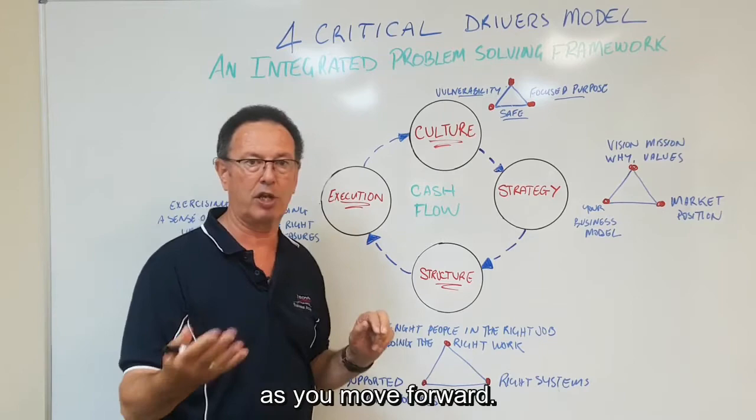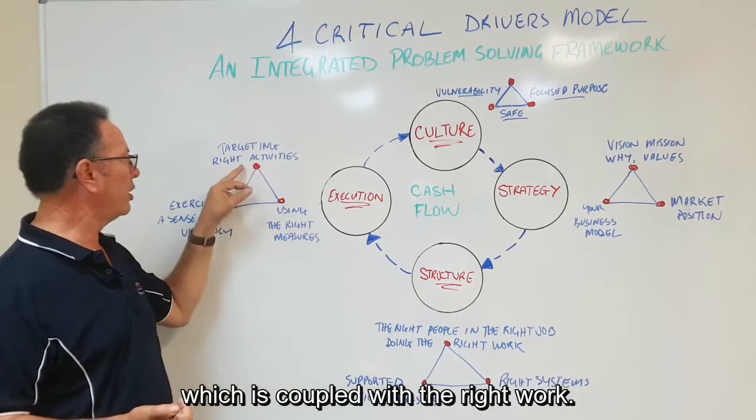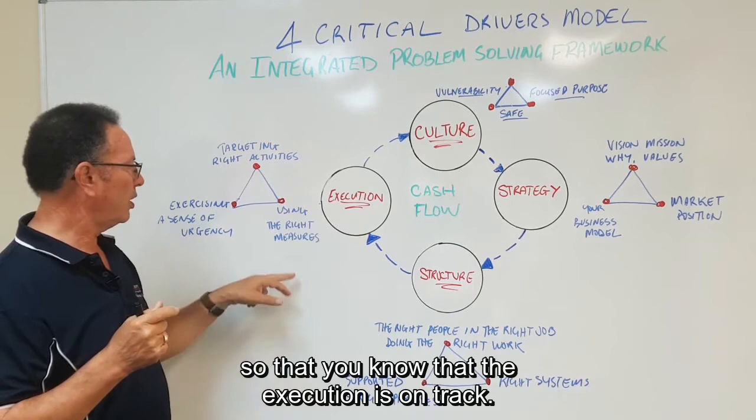The third one is around execution. So it's targeting the right activities, which is coupled with the right work. You've got to know what you're going to target and why and what the expected result will be so that you know that the execution is on track.